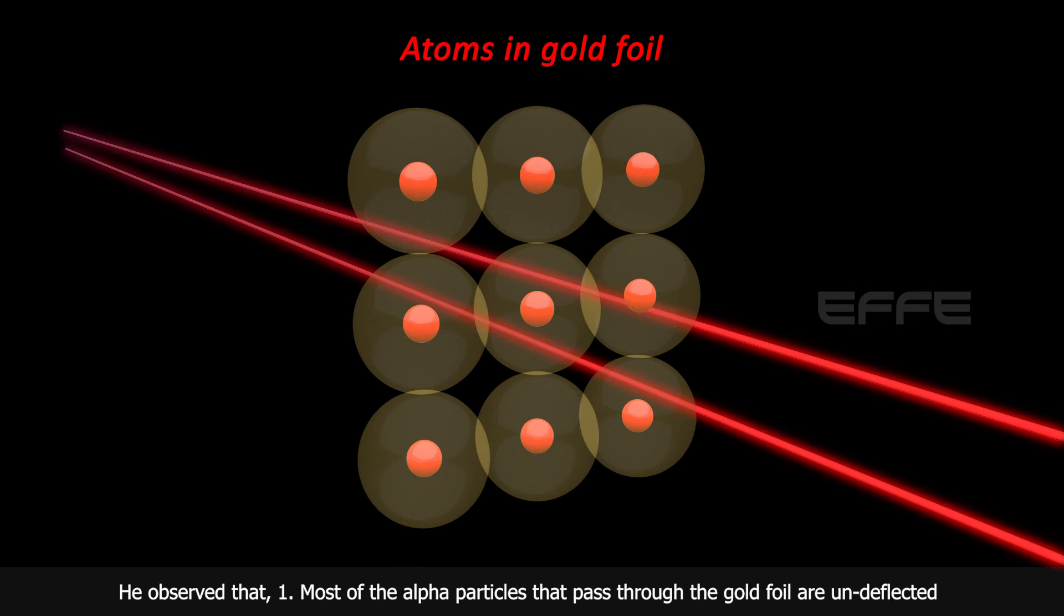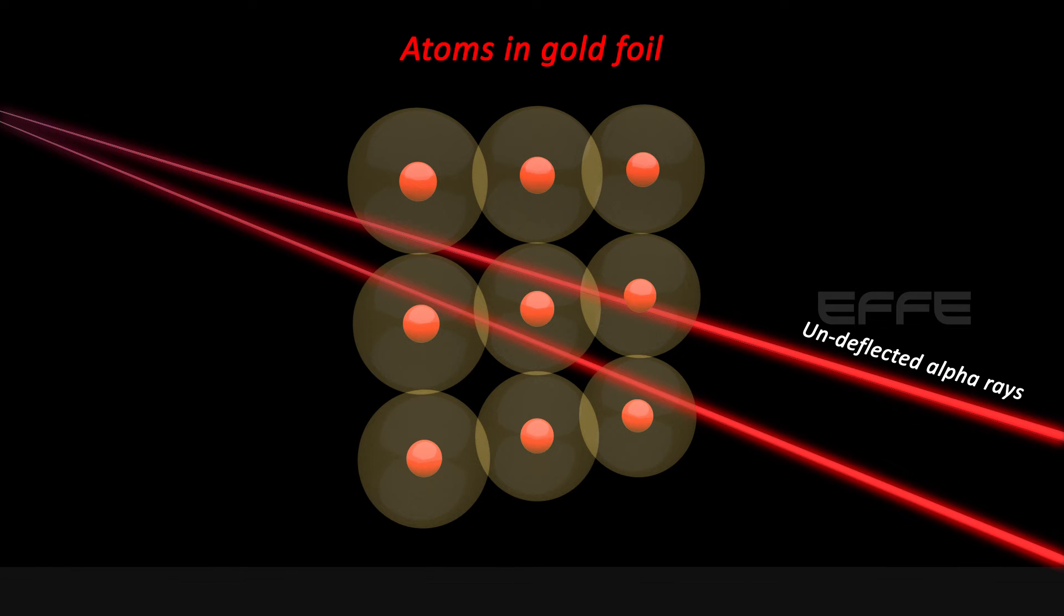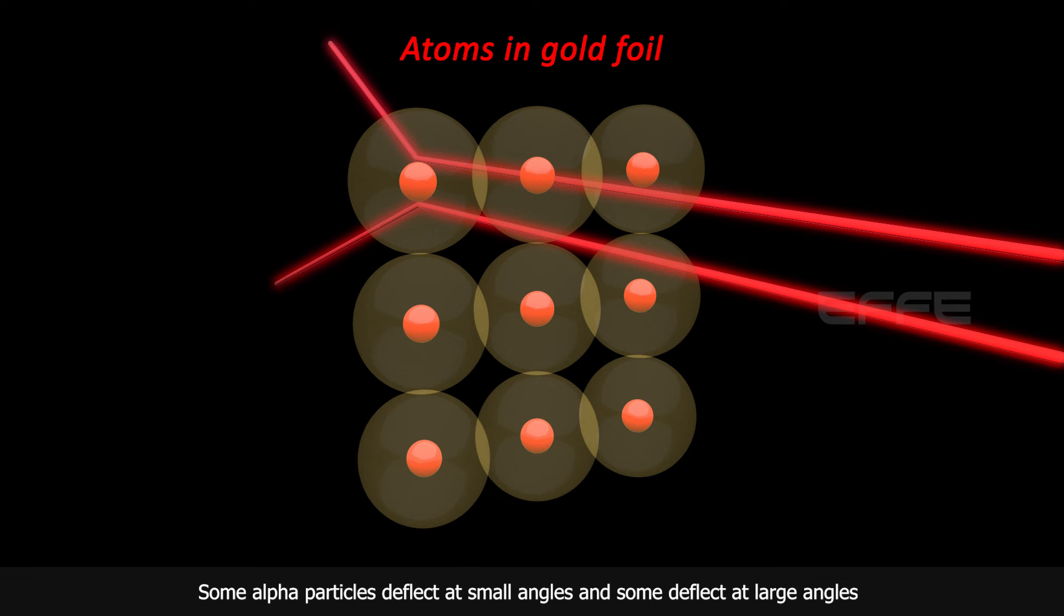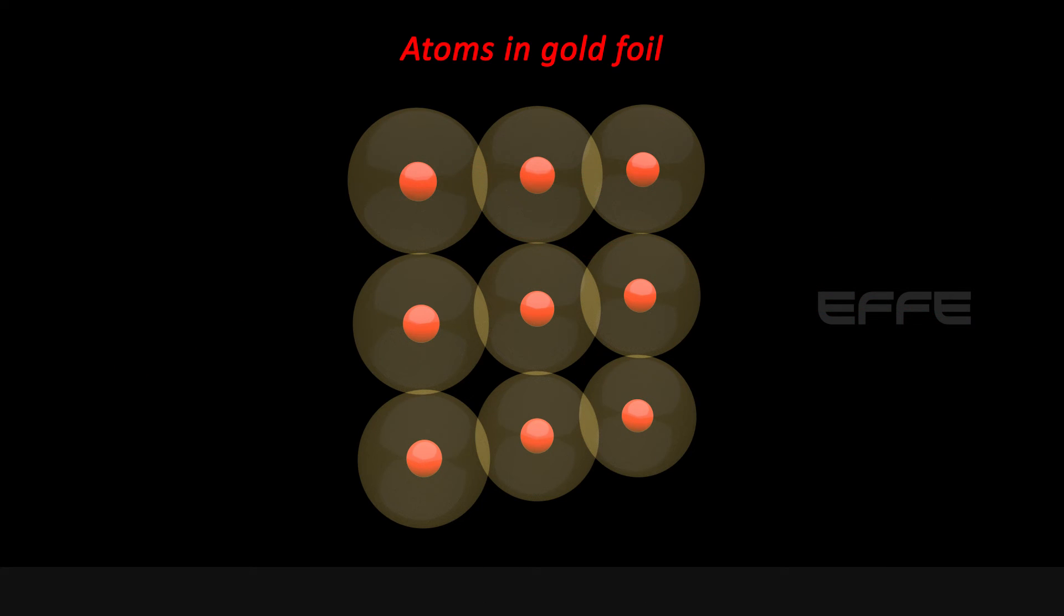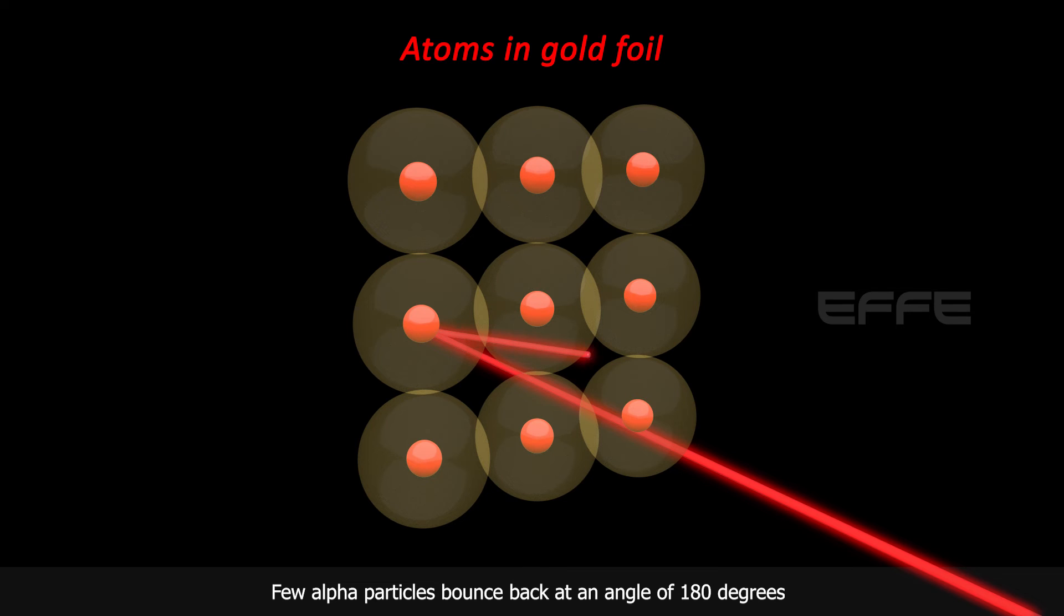He observed that most of the alpha particles that pass through the gold foil are undeflected. Some alpha particles deflect at small angles and some deflect at large angles. Few alpha particles bounce back at an angle of 180 degrees.